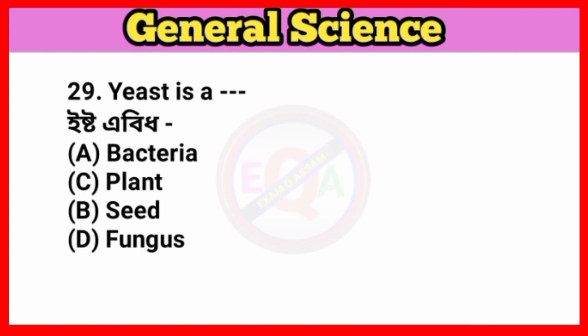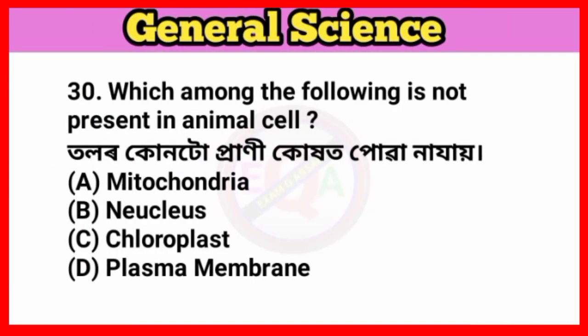Answer option D: Fungi and other decomposers. Question number thirty: Which among the following is not present in an animal cell? Answer option C: Chloroplast.